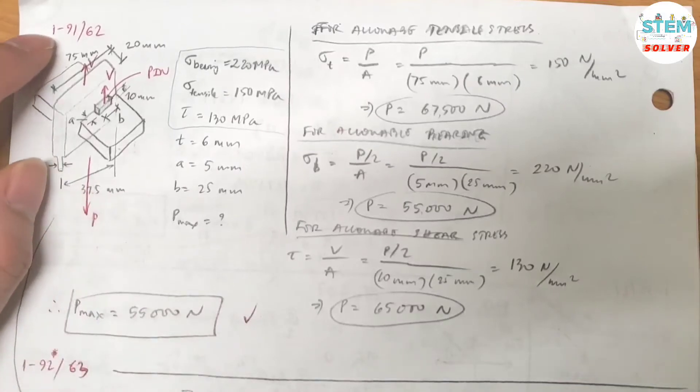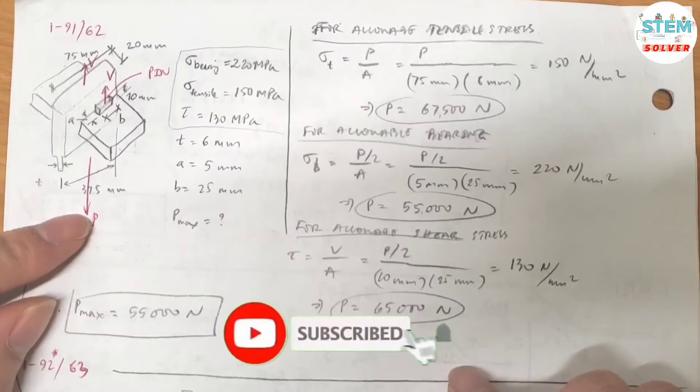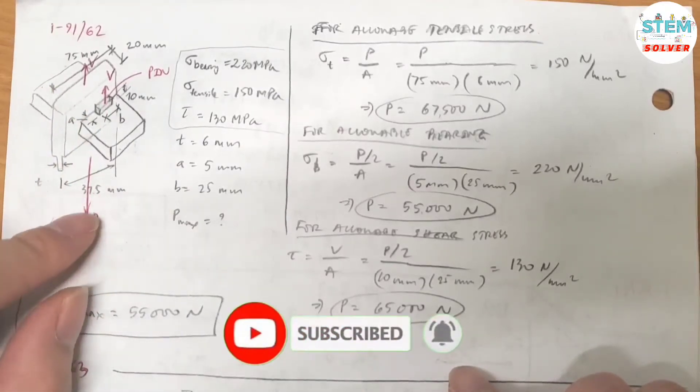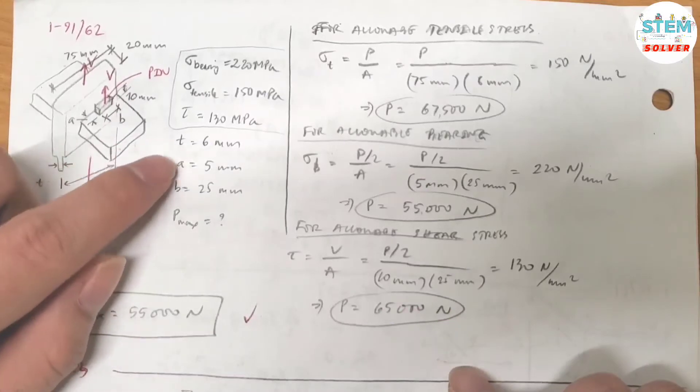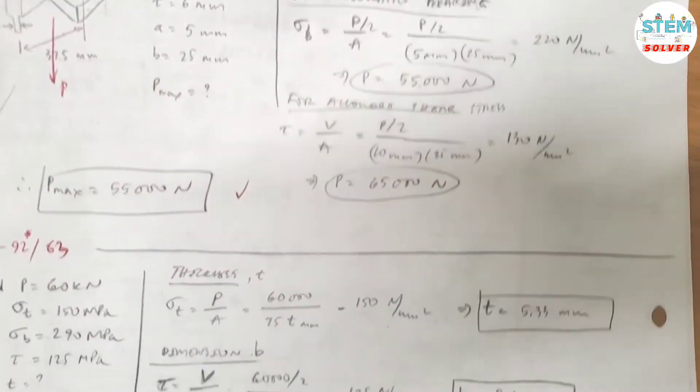This is the reverse problem for determining the maximum force P. For this problem, it's just the opposite way. You're given P and asked to find the dimensions T, A, and B. The figure is the same, so let's move down here.